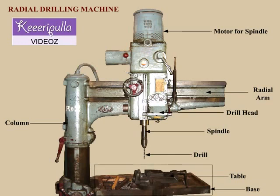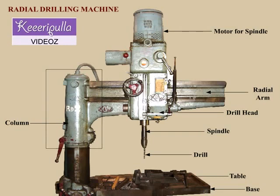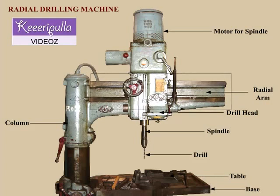The column supports the radial arm. The motor for elevating the radial arm is mounted on the column. The radial arm can be swung radially above the column to any position over the work bed, and hence the name radial drilling machine. The radial arm can also be raised or lowered along the column by means of an elevating screw to accommodate work pieces of different heights. The drill head and the motor for driving the drill spindle are mounted on the radial arm.